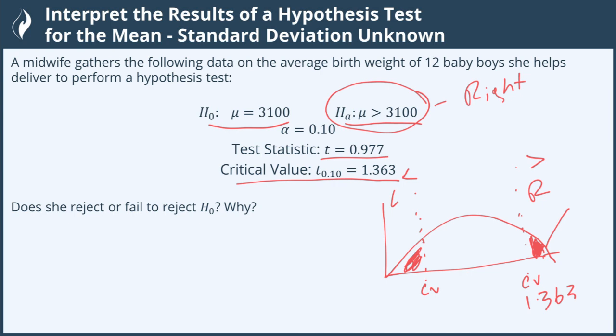The test statistic is at 0.977, which is out here. Because of that, we can clearly see that our test statistic is less than our critical value, and therefore we fail to reject.